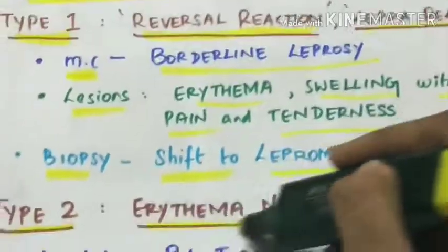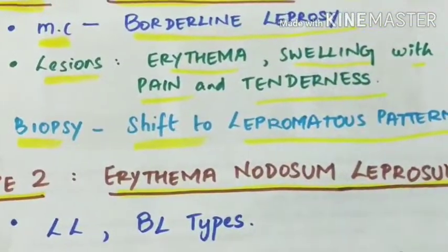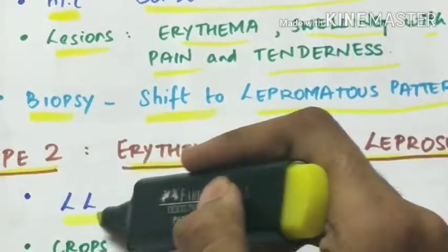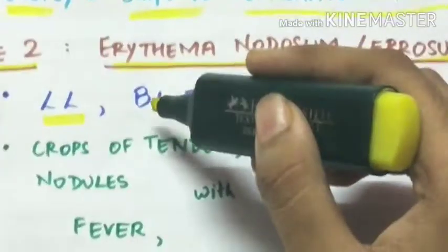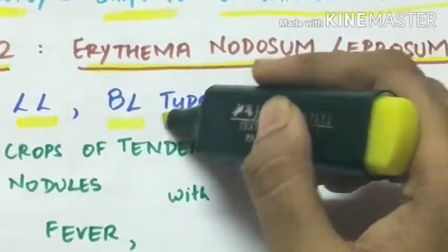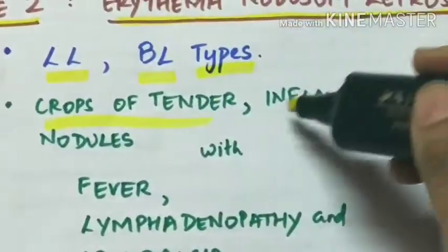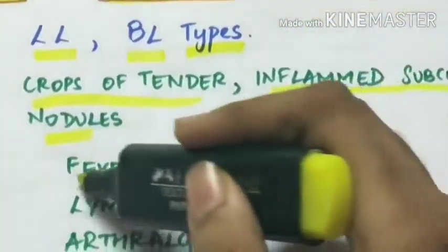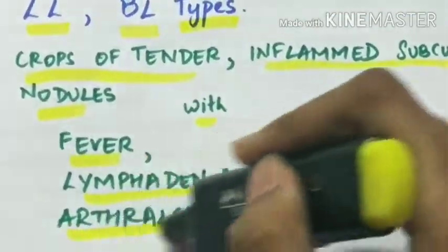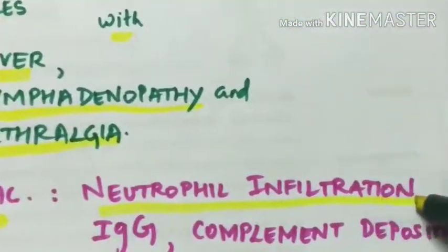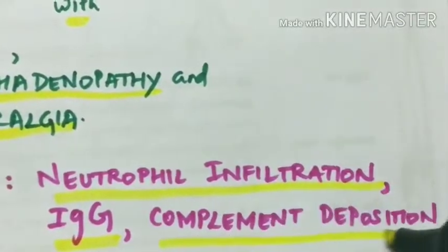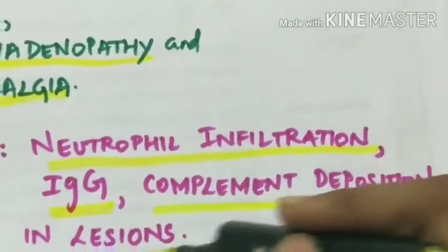Type 2 is called erythema nodosum leprosum (ENL). This is common with lepromatous leprosy and borderline lepromatous types. There are crops of tender, inflamed subcutaneous nodules with presence of fever, lymphadenopathy, and arthralgia. The characteristic finding is neutrophilic infiltration, with immunoglobulin G and complement deposition in the lesions.